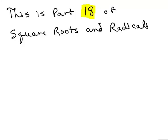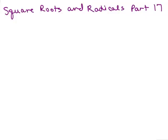This is part 18 of Roots and Radicals. In this video, I'm going to go over how to rationalize denominators, but we'll be working with something a little bit different — problems that look like 1 over 3 minus square root of 2, where as opposed to having just a square root in the denominator, I have a binomial.